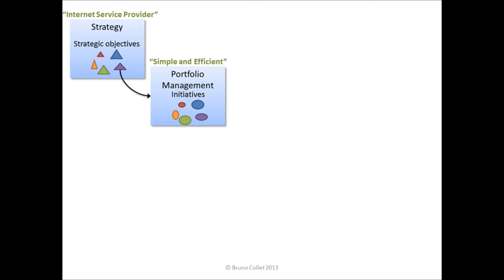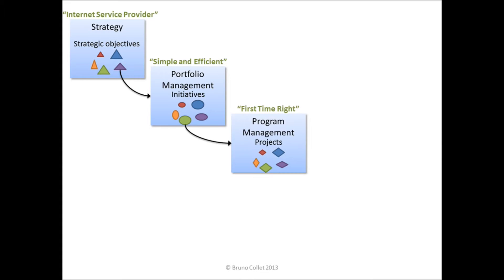At this level, the decision-making usually focuses on sorting initiatives, prioritizing them based on business value, business benefits, costs, resources, or risks. Once an initiative is started, it gives birth to a program or project. One such program is 'First Time Right,' which focuses on making sure that from the time a customer orders, for example, a DSL connection, and this connection is activated and the customer can use it, there are no delays and no mistakes from the company or customer's point of view. So clearly, this program will support the 'simple and efficient' objective.